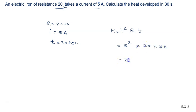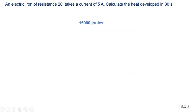5 squared is 25, into 20, into 30. We will solve it. 25 times 20 times 30 equals 15,000 joules. So the right answer to the problem is 15,000 joules.